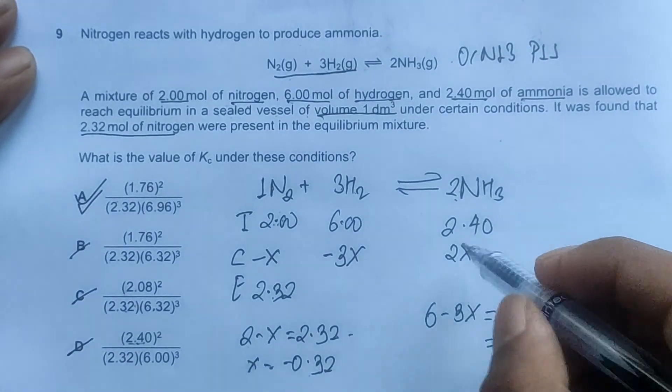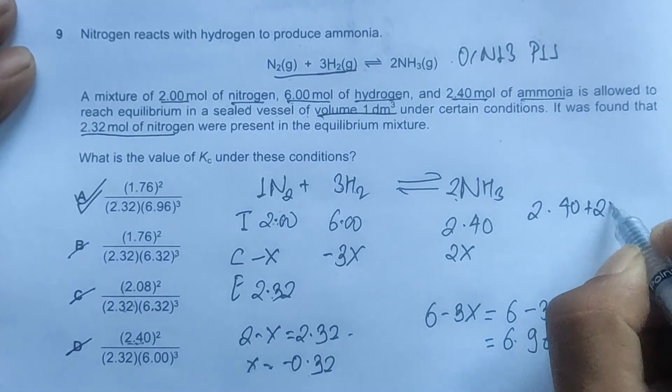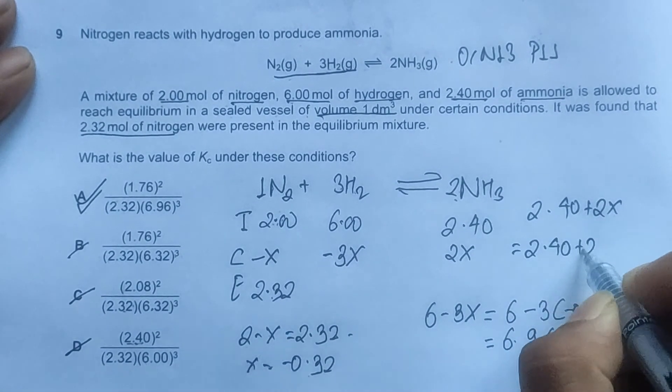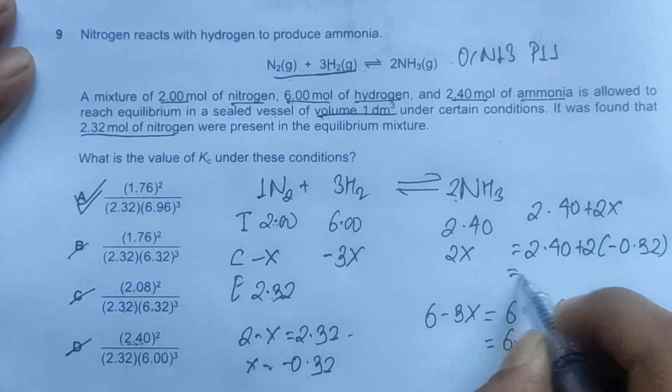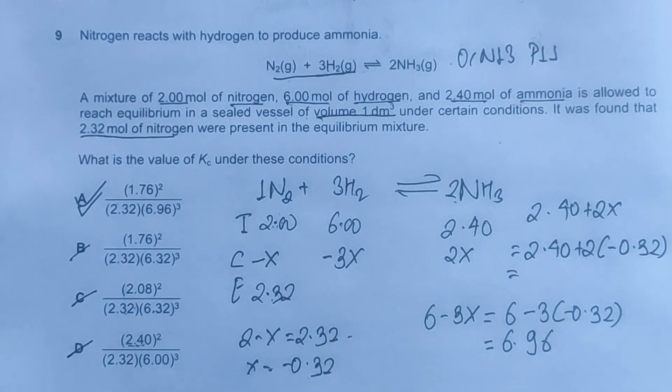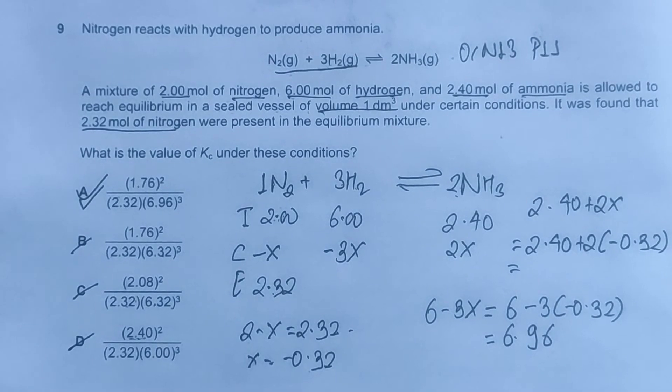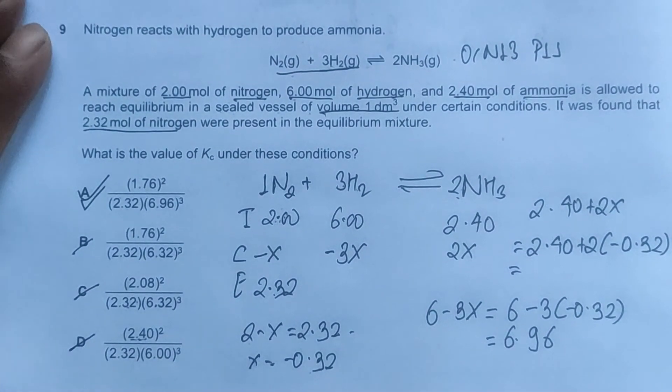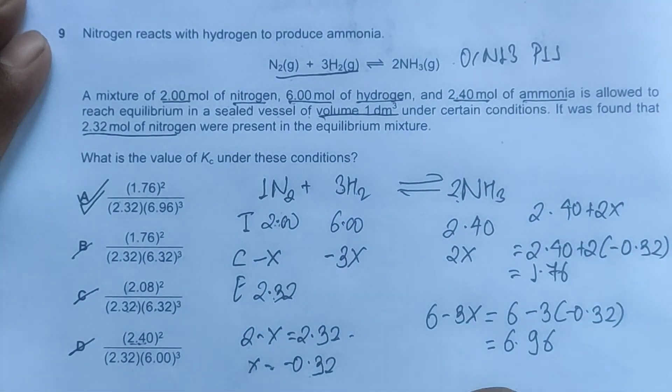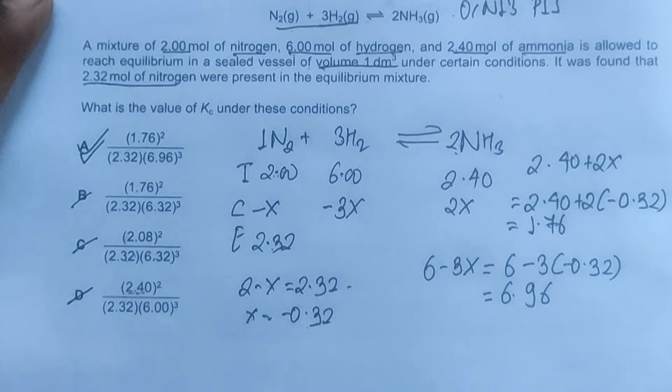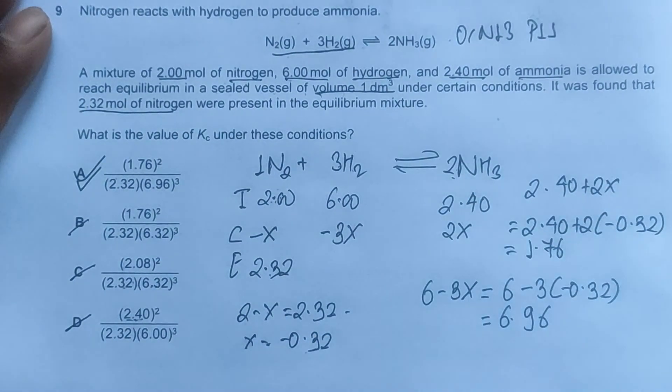This means we have 6.32 here, so we'll rule out options B and C as well. That means A is the final correct answer. We'll check for ammonia as well. For ammonia, we have 2.40 plus 2X equals 2.40 plus 2 times minus 0.32. We'll have 2 multiplied by 0.32 is 0.64, and 2.40 minus 0.64 is 1.76.